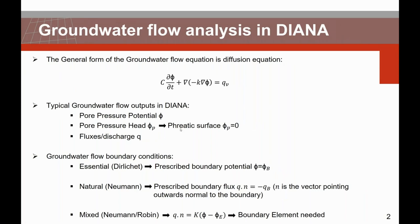The typical outputs are the pore pressure potential, the pressure head, and the flux. For those who have been following some of the e-learning sessions, I already talked about these during the seepage phase webinar. Regarding boundary conditions, you can consider three classes: the essential one, also called the Dirichlet condition, where you prescribe the potential phi to a value phi_b; the natural one, also called the Neumann boundary condition, where the flux is prescribed; and the mixed one, also called the Neumann-Robin condition, for which you need to use boundary elements — and we will use this one today.